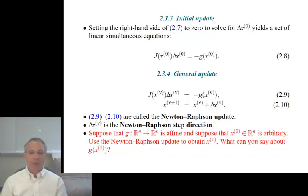I'm going to think of needing to do this iteratively, over multiple iterations. And for any particular iteration, let me denote a particular iteration by x superscript nu, the Greek letter nu, then I can write down the general update as 2.9 and 2.10. They're called the Newton-Raphson update. And the resulting delta x is called the Newton-Raphson step direction. And I use delta x nu to add to x nu to calculate x nu plus 1. We keep on doing that. We can't do it forever. We do it until a stopping criterion is satisfied.